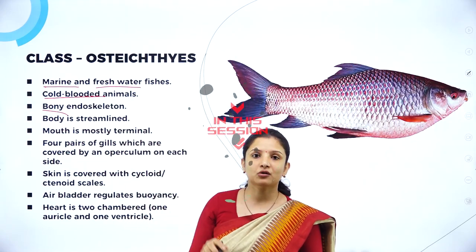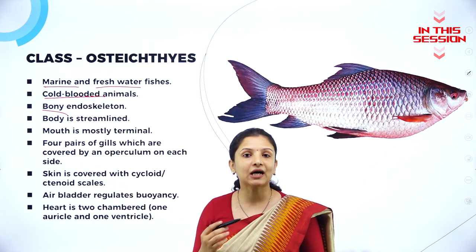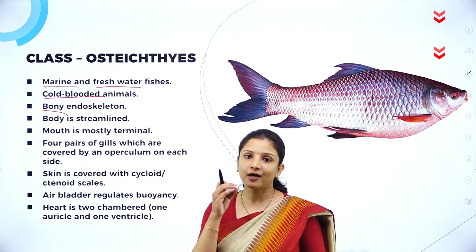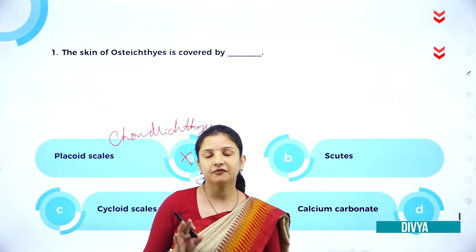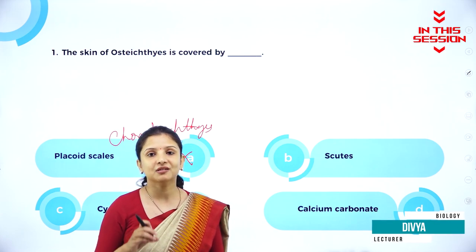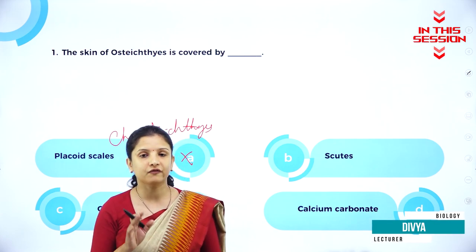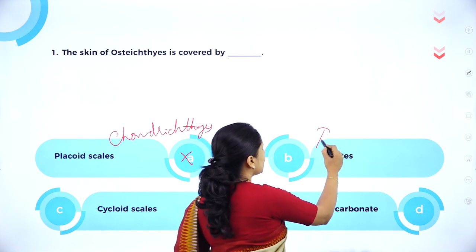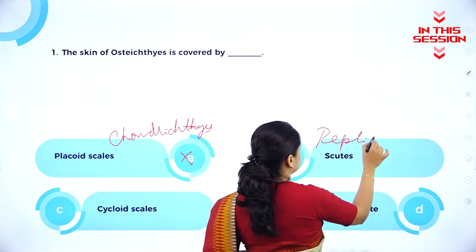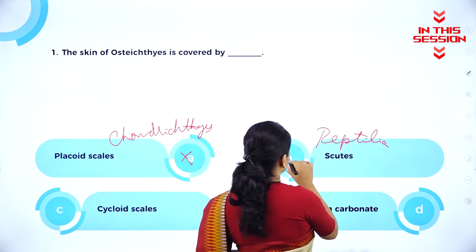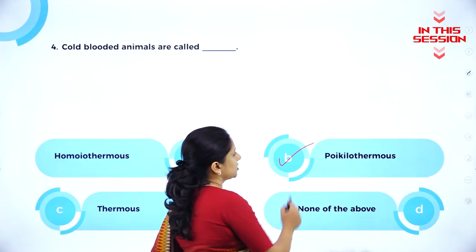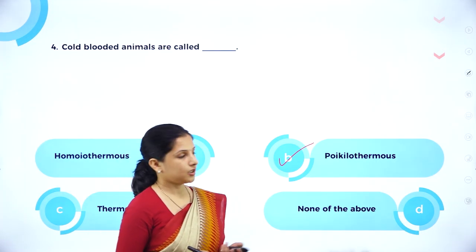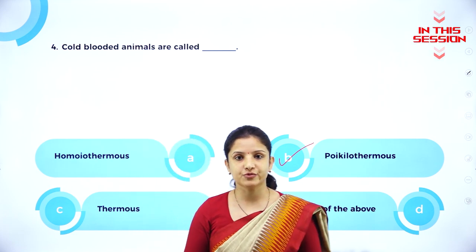Chondrichthyes have an endoskeleton which is cartilaginous, but Osteichthyes have a bony endoskeleton with hard bones. Scutes are found on reptiles — the dry cornified skin of reptiles is covered by scutes — and are found in class Reptilia. Poikilothermal is the term for cold-blooded animals. So option B is the right option here.